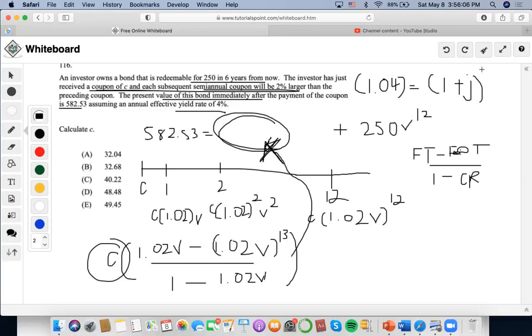So what is semi-annual? So it would be 1.04 to the 1 divided by 2 minus 1. So J is going to be 1.98%. Now, that means that we use this to solve for what this is working with.